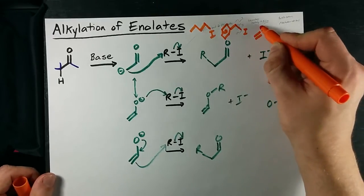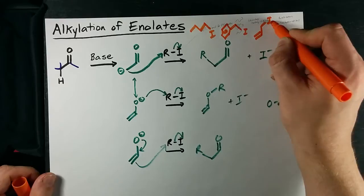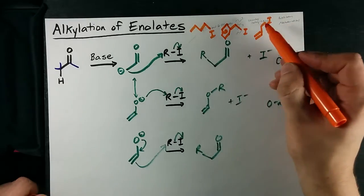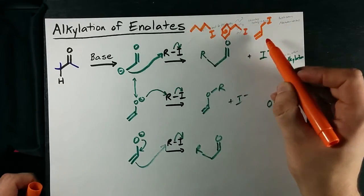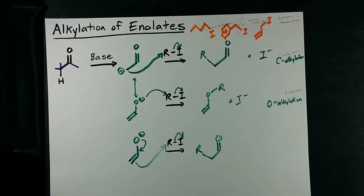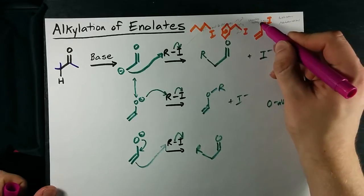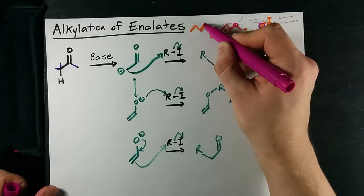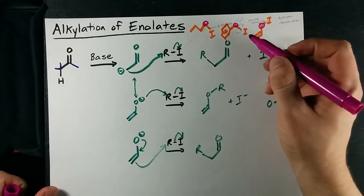You could even have what we call an allylic halide, which means the I is connected to a C, which is connected to another C that has a double bond. As long as the carbon that the halogen is attached to is only attached to one other carbon, it's primary.